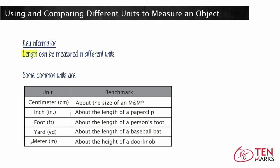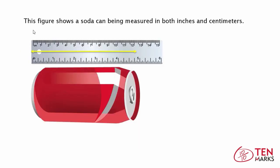Now that you know these different units of length, let's look at the first object you are going to measure. This figure shows a soda can can be measured in both inches and centimeters. As you can see, the soda can is about 5 inches or about 12 centimeters.